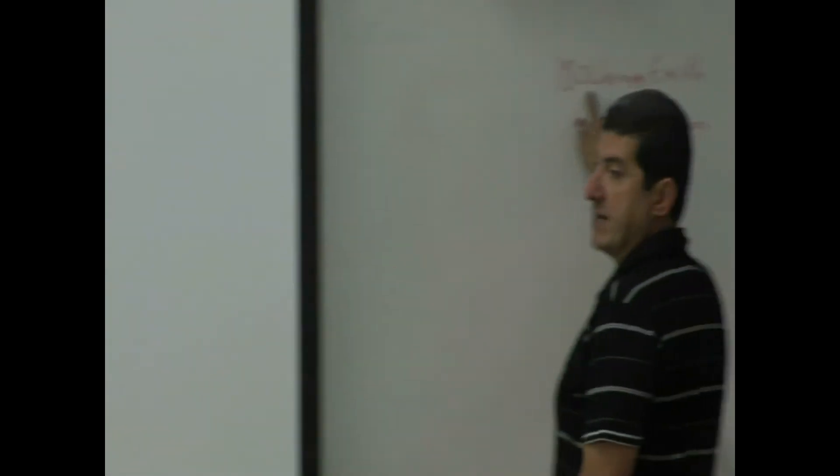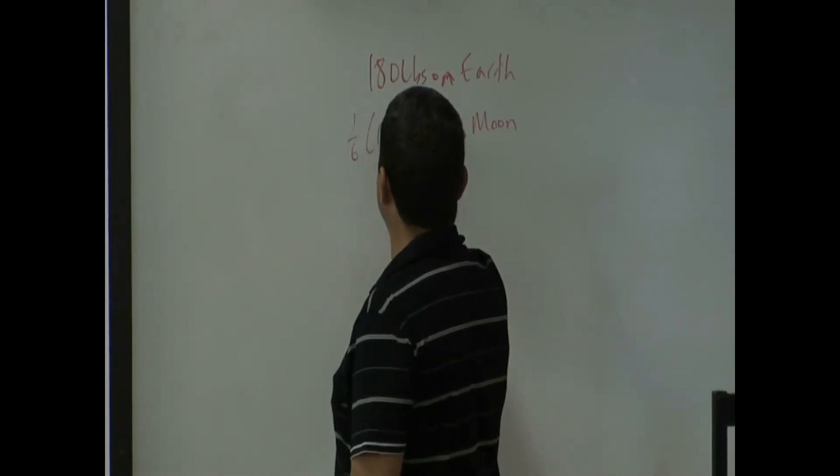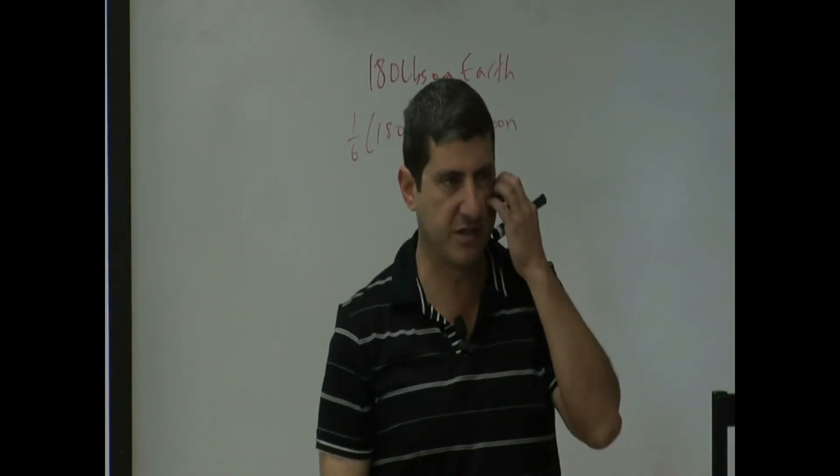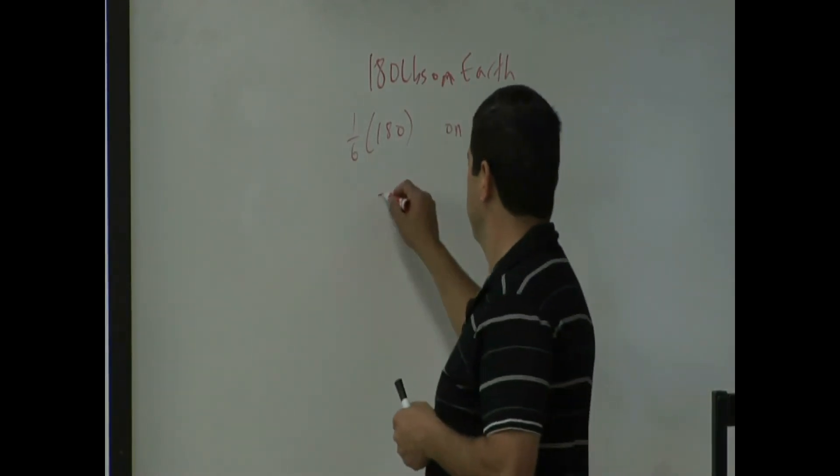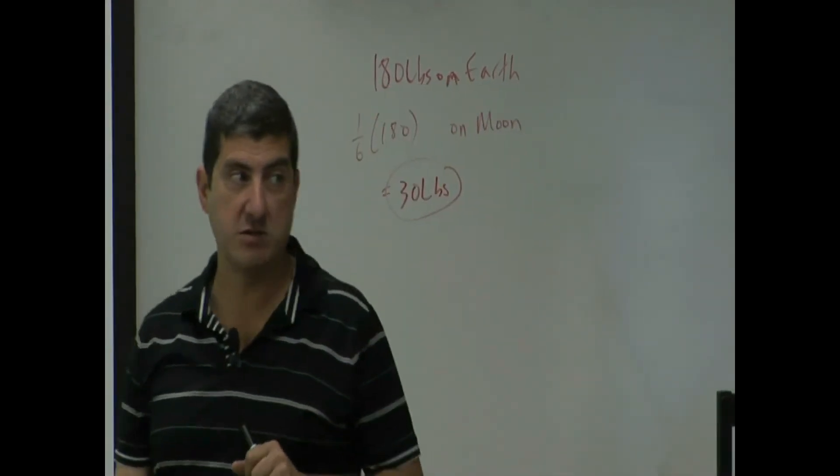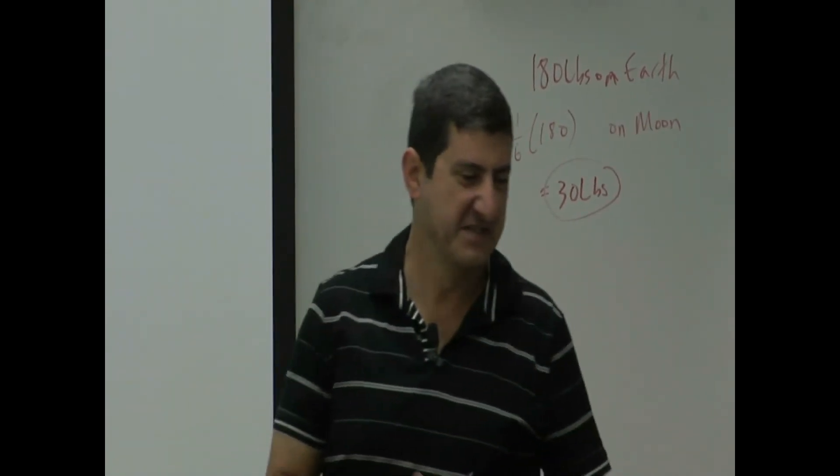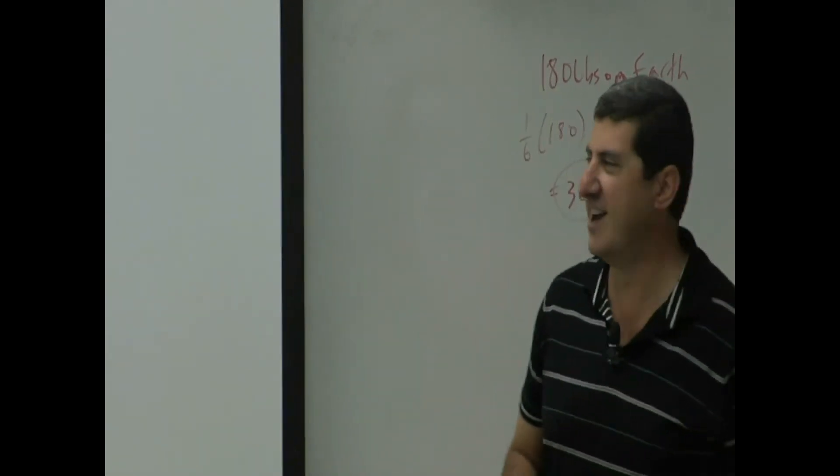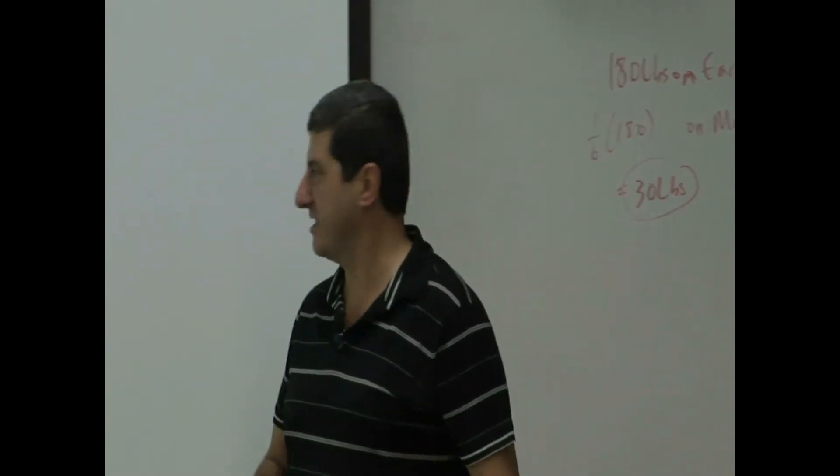One-sixth of 180. Well, I chose a number that is divisible by six on purpose, so that's 30 pounds, right? The fastest way to lose weight, just go to the moon. I mean, you will look the same, okay? But at least you will think you weigh less, so your self-esteem will go up. So, 180 pounds, you weigh only 30 on the moon.